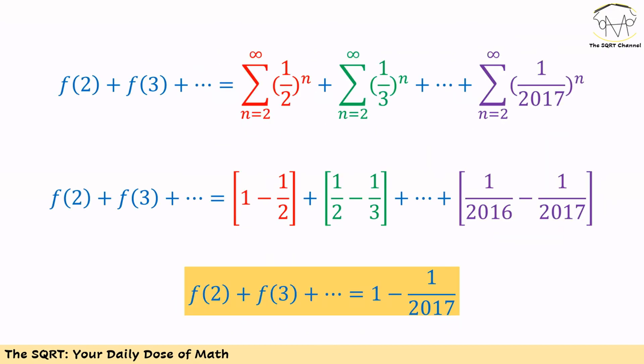So f of 2 plus f of 3 and so on so forth can be written as 1 minus 1 over 2 plus 1 over 2 minus 1 over 3 and so on so forth until 1 over 2016 minus 1 over 2017. Many of these terms can be cancelled out and the final answer is the first term minus the last term which is 1 minus 1 over 2017 and that's our answer.